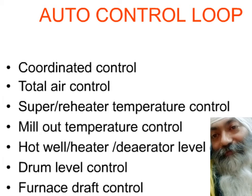Using DCS, we can implement auto control loops including coordinated control, total air control, superheater and reheater temperature control, mill outlet temperature control, hot well, heater, and deaerator level control, and drum level control. Operators can control all these at the click of a button, including furnace draft — the amount of air entering the furnace in a controlled manner.